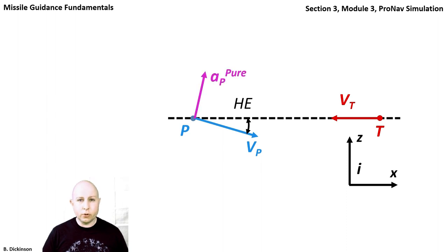We're going to look at pure ProNav and true ProNav. The navigation gain is going to be 3. The heading error is going to be negative 20 degrees.